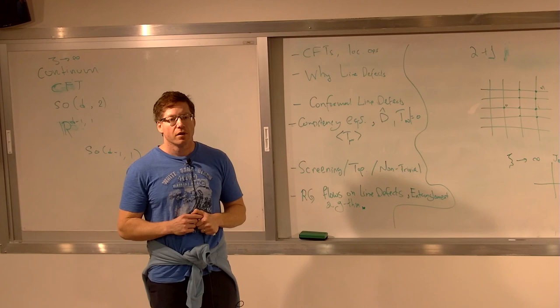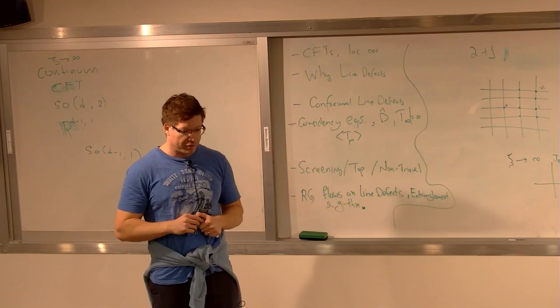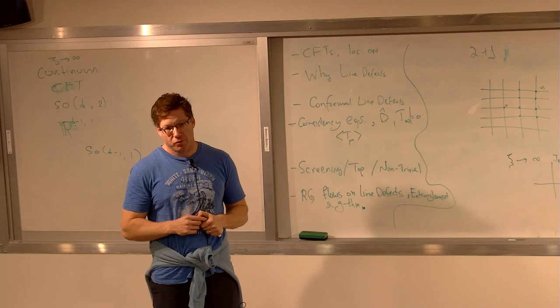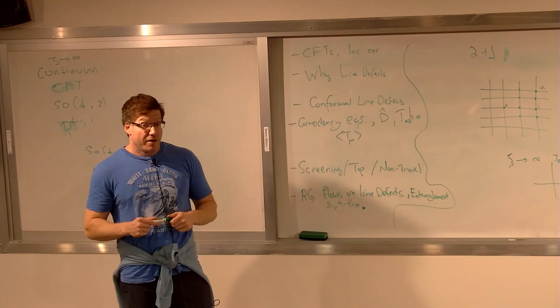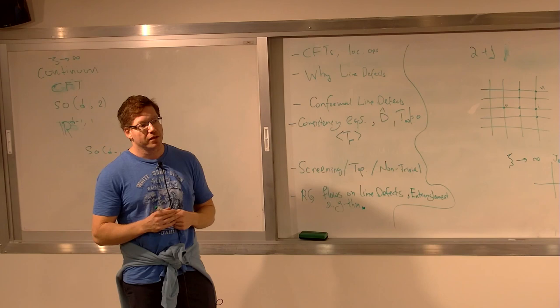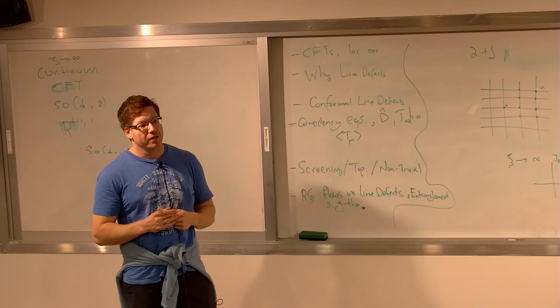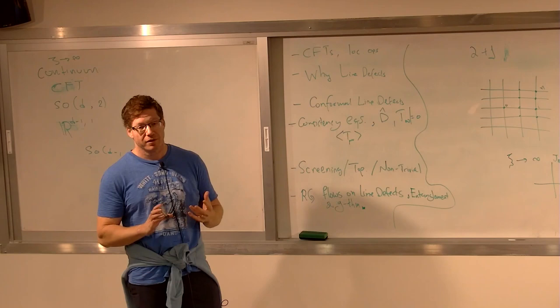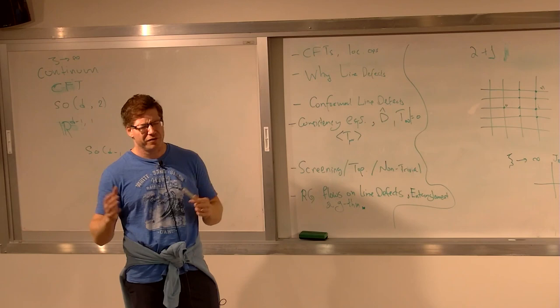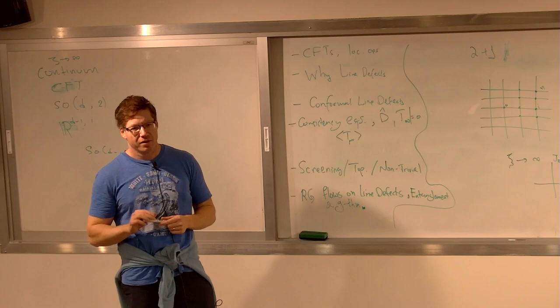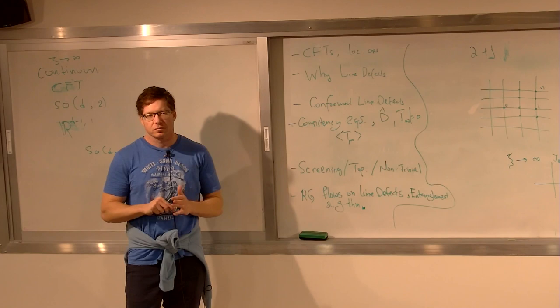Lorentz invariance arises sometimes but not always — what you get in many cases is what's called Lifshitz field theory. Sometimes you get a dynamical exponent equal to one and you get an emergent light cone. There is no fundamental explanation I'm aware of for when this happens. But it's very generic. People haven't found many interesting phase transitions with dynamical exponents not equal to one — there are very few, so it may be more generic to land on z = 1.